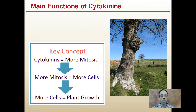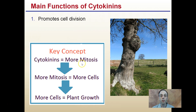The main functions of cytokinins: the first one is promoting cell division to occur. Cell division involves mitosis, so if cytokinins create more mitosis, that means more cells, and more cells relates to plant growth. So cytokinins are involved in plant growth.